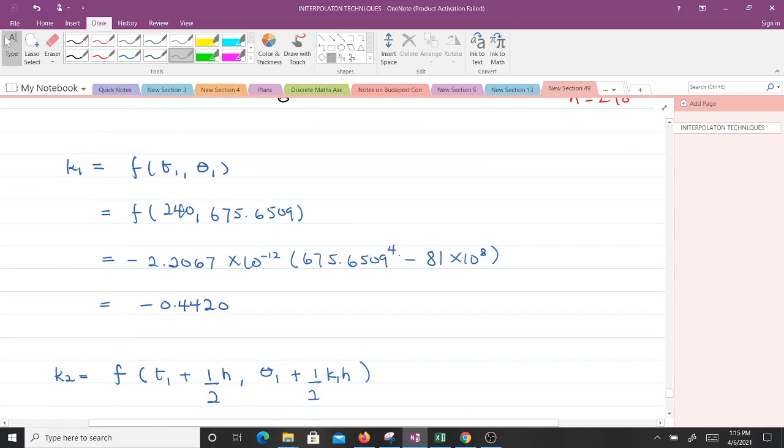In finding K1, K1 is given to be F of T1, theta 1. Now it will be F of 240, 675.6509. When you put it into F of T theta, this is what you get. When you evaluate, you get negative 0.4420.